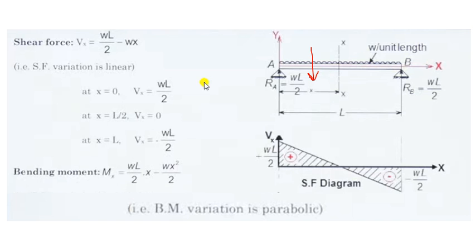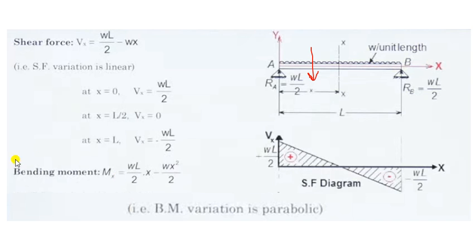We put a negative sign because the UDL acts in the downward direction, that is the negative y-axis. So the term −w·x appears, where w is in kilonewtons per meter and x is in meters, giving force in kilonewtons. This gives us the shear force equation: Vx = RA − w·x. By putting values of x, we get the shear force at every point. Now our task with the shear force equation is complete, and we move to find the bending moment equation.